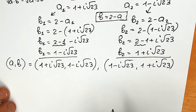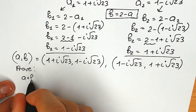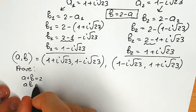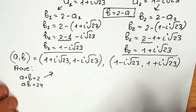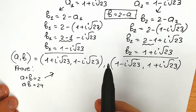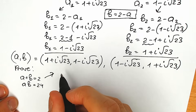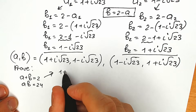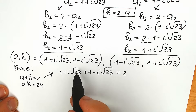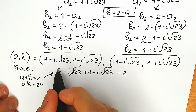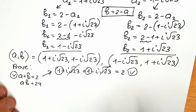Now let's check it quickly — many students want to see a proof. Let's verify the sum first: a + b = 2. We have (1 + i√23) + (1 − i√23). The i√23 terms cancel, and we get 1 + 1 = 2. Addition checks out perfectly.